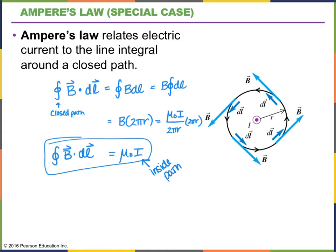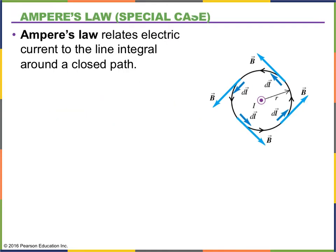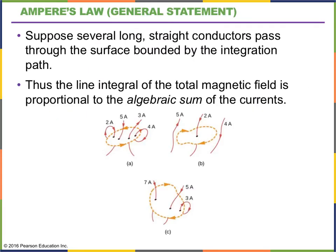We derived this for a particular case, but we can expand it and say that in general this is always going to be true. For example, if we had many wires traveling through the circular path — the yellow path being the path we're integrating around — we find that the integral is going to equal μ₀ times the sum of the currents. So B·dl around the yellow path equals μ₀ times the total current inside.